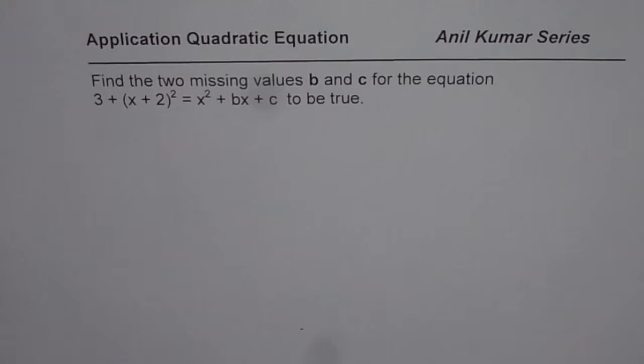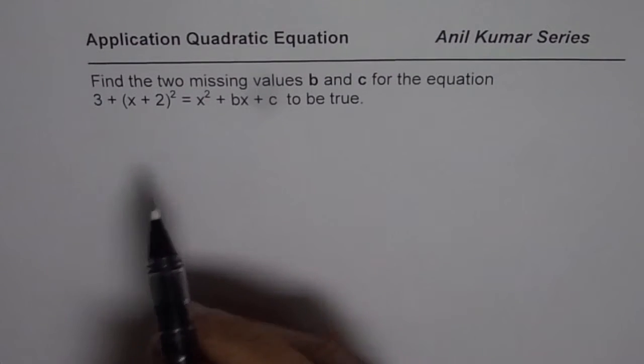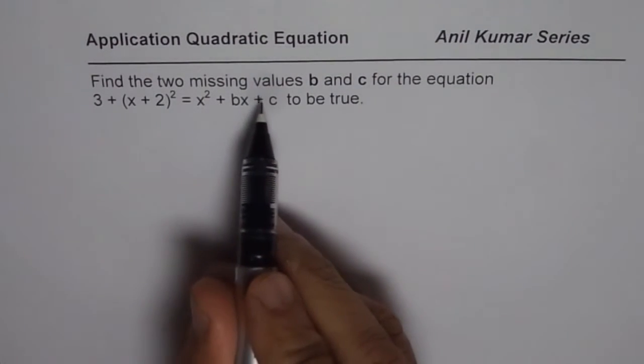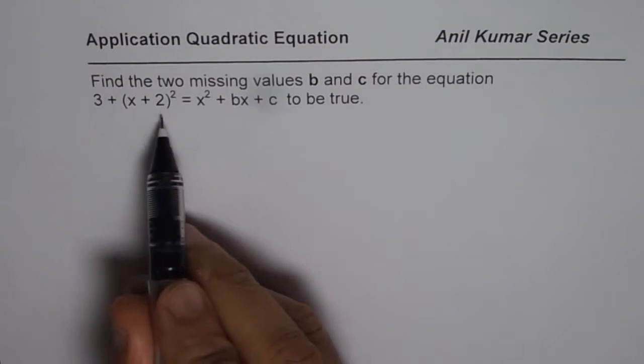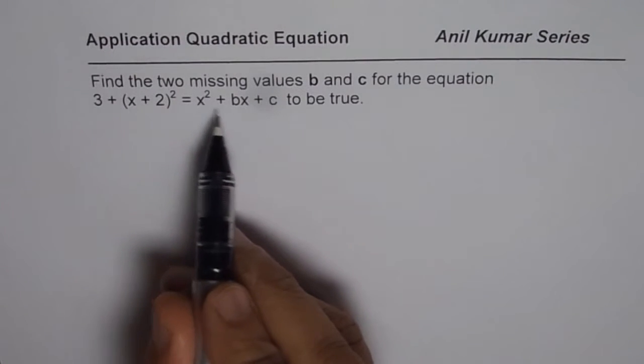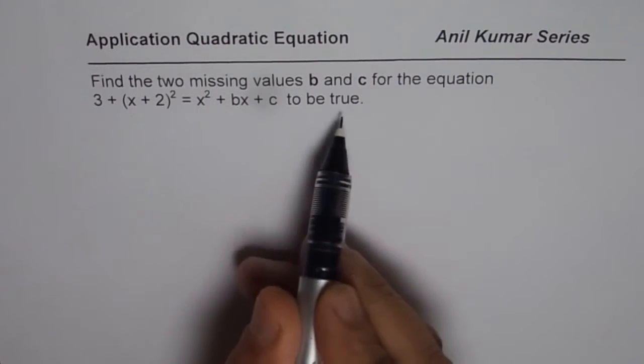I am Anil Kumar and here is an application question on quadratic equation. Find the two missing values b and c for the equation 3 plus x plus 2 whole square equals x square plus bx plus c to be true.